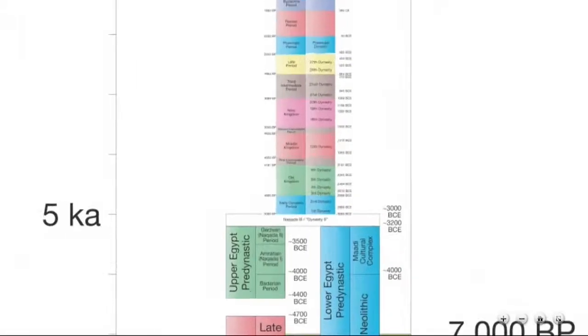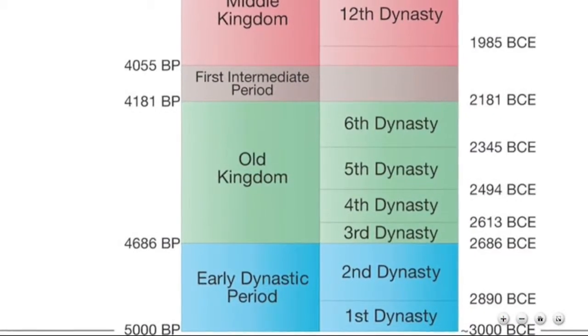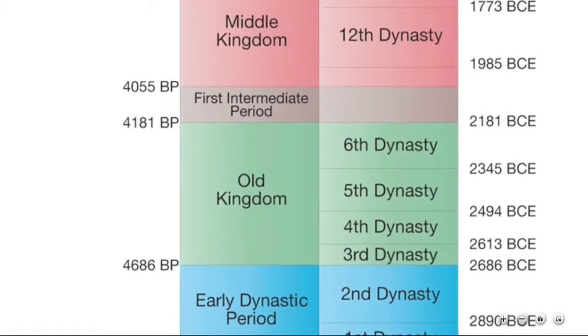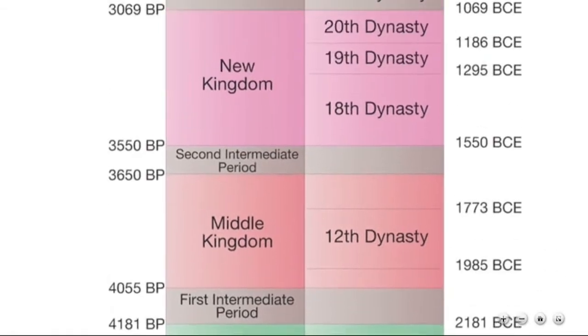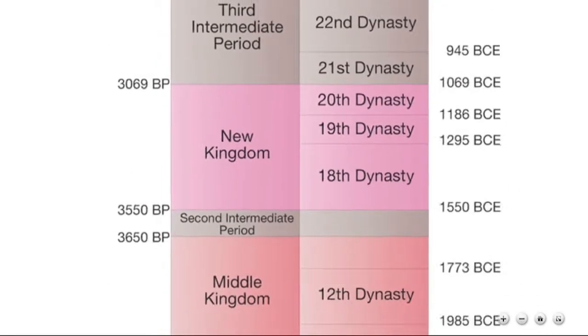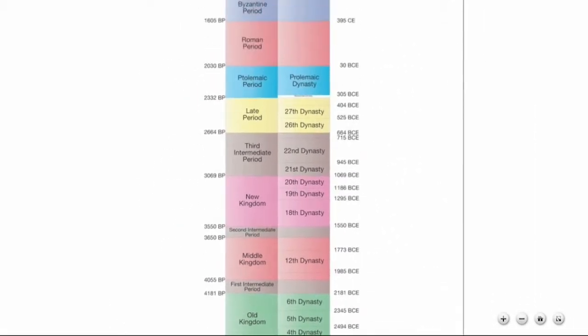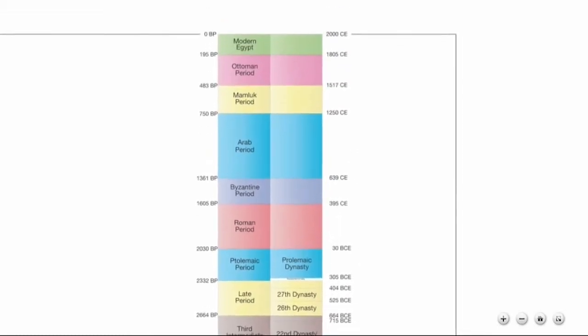Now we can see the pharaohs of Egypt, from the Old Kingdom, to the Middle Kingdom, and the New Kingdom. The Romans finally appear, as do Arabs and Ottomans. Soon, Chronozoom will be able to zoom even farther, down to the year, month, week, and even individual days.